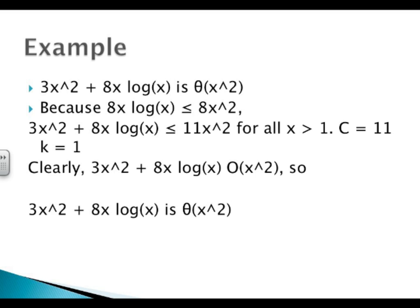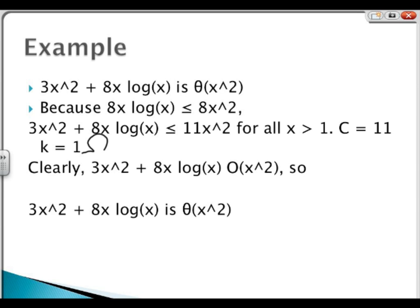On the converse side — stepping back — this whole relationship is Big Omega. Whenever you have 3x squared plus 8x log x, you know that's going to be Big O of x squared, because you have 3x squared so the constant is already bigger, plus 8x times log x, which is just going to be more positive. So in this case, 3x squared plus 8x log x is Big Theta of x squared.